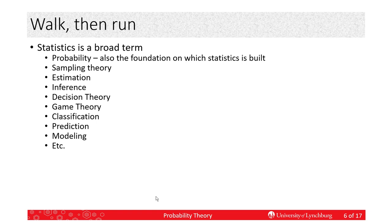So, you see sampling theory, estimation, inference, decision theory. Estimation and inference are an extension of decision theory. Game theory is an extension of decision theory. We have classification, prediction, modeling, many others, and most of these overlap in some way. And, in fact, all of these require probability because it's the foundation.